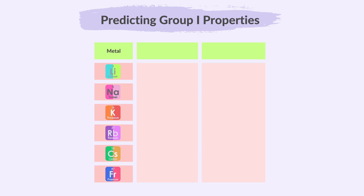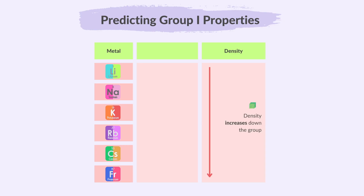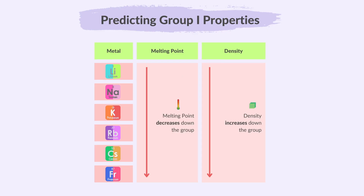For example, if we observe that the density increases in the first 3 elements, we can predict that subsequent elements will have even higher densities. Similarly, if we see that the melting point decreases in the first 3 elements, we can expect it to decrease further in the elements further down the group.